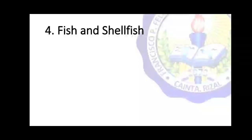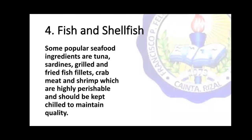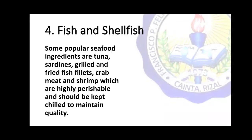Number four, we have fish and shellfish. Some popular seafood ingredients are tuna, sardines, grilled and fried fish fillets, crab meat, and shrimp. These are highly perishable and should be kept chilled to maintain quality.